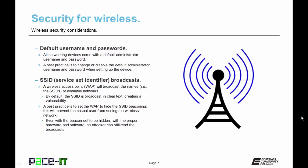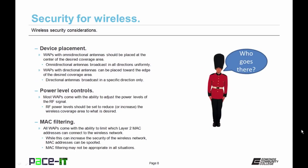Even with the beacon set to be hidden, with the proper hardware and software an attacker can still read those broadcasts, so that in itself will not stop a determined hacker. Then there's device placement: wireless access points with omnidirectional antennas should be placed in the center of the desired coverage area, as omnidirectional antennas broadcast in all directions uniformly. Wireless access points with directional antennas can be placed toward the edge of the desired coverage area, as directional antennas broadcast in a specific direction only.